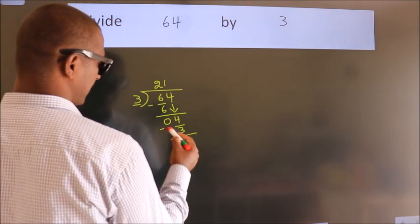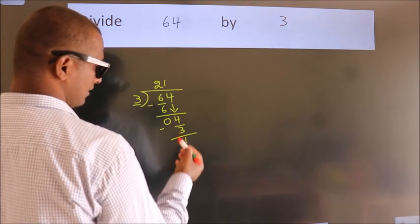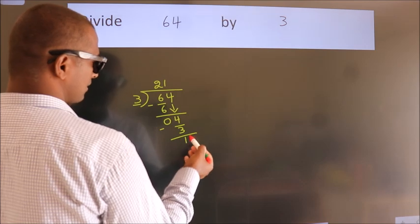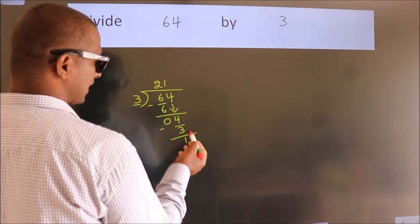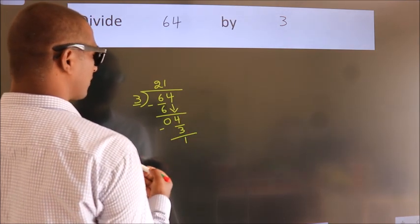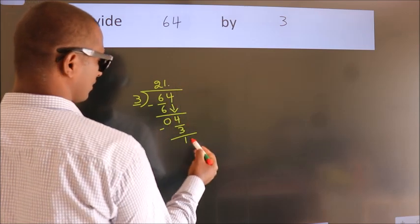Now we subtract. We get 1. After this, no more numbers to bring it down. So what we do is, we put dot and take 0.